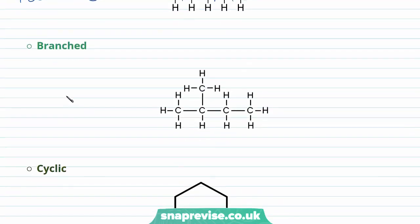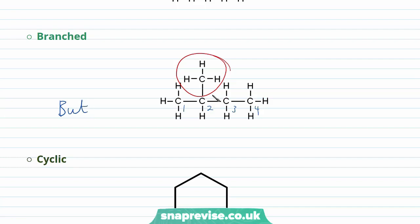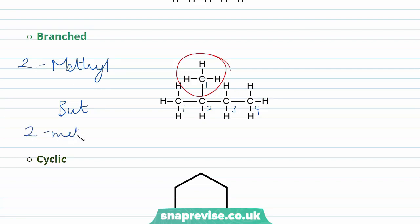We can also get branched chain alkanes. So this alkane as you can see here has a branch, a branched group. The longest carbon chain is four carbons long, so the stem is going to be bute. We can see that on our second carbon we have this branch. The branch has only one carbon in it — it is a methyl group. So the prefix is going to be methyl, and the locant of our prefix will be two, as the methyl is on the second carbon. So we have 2-methylbutane.